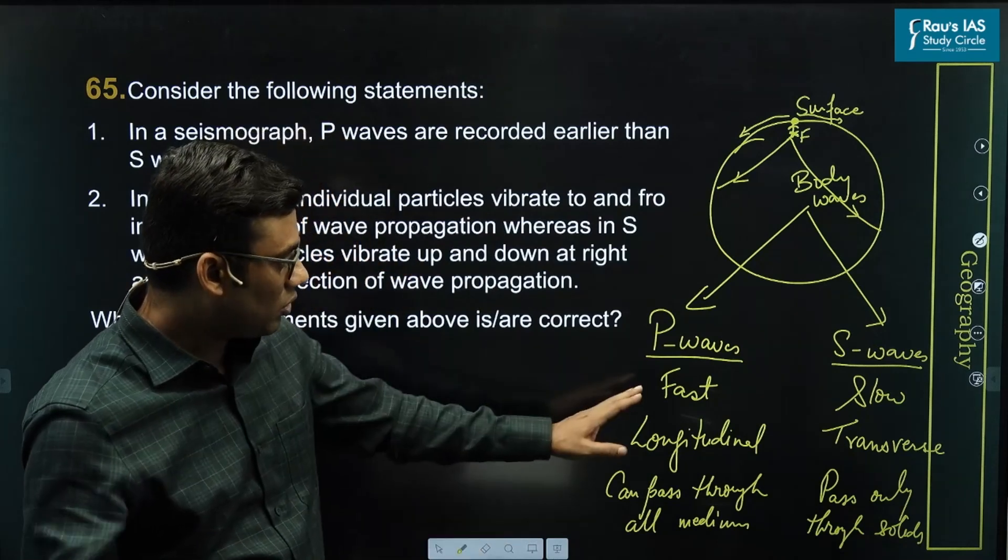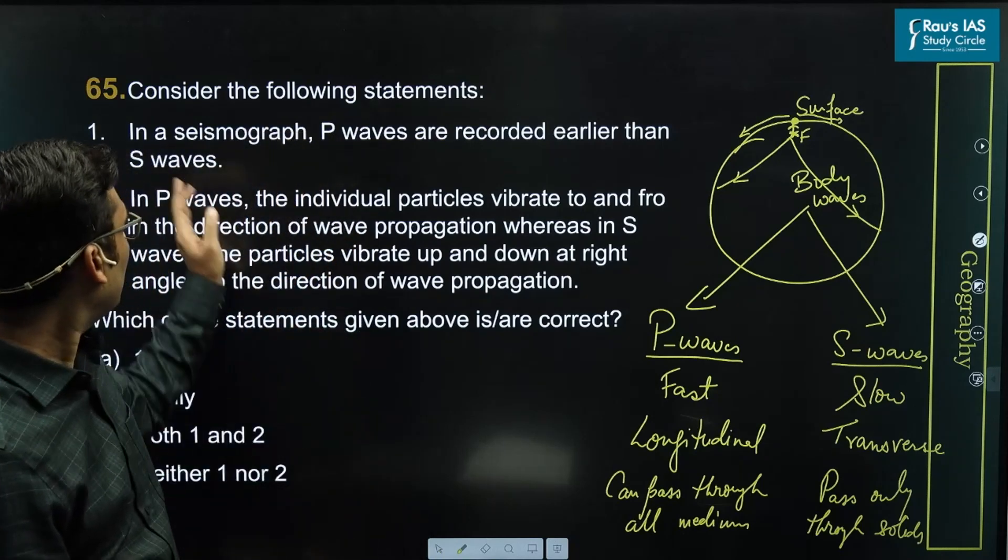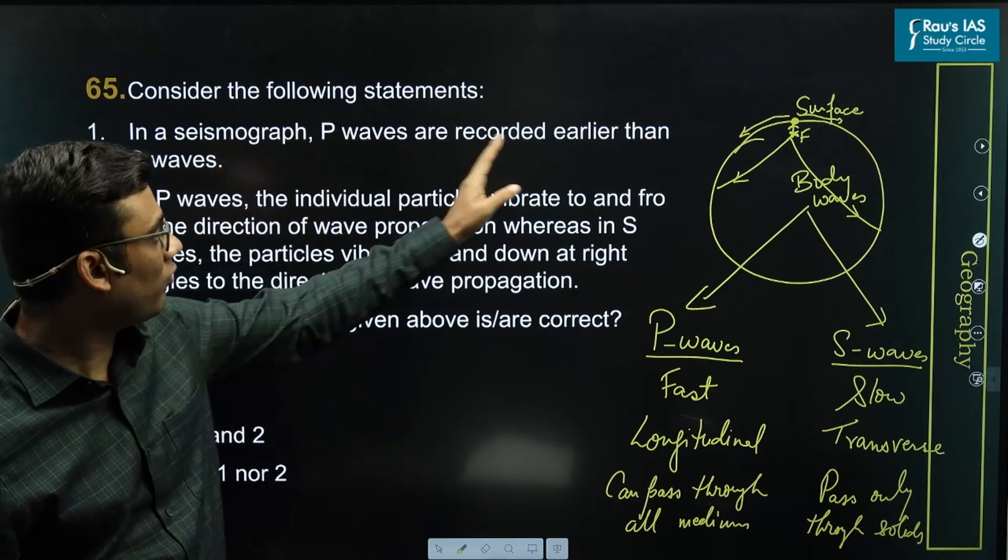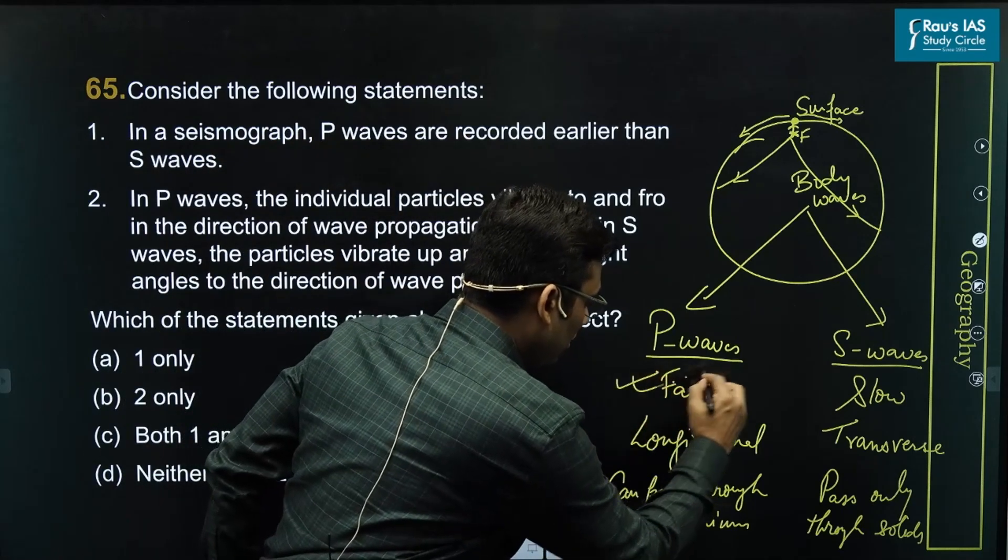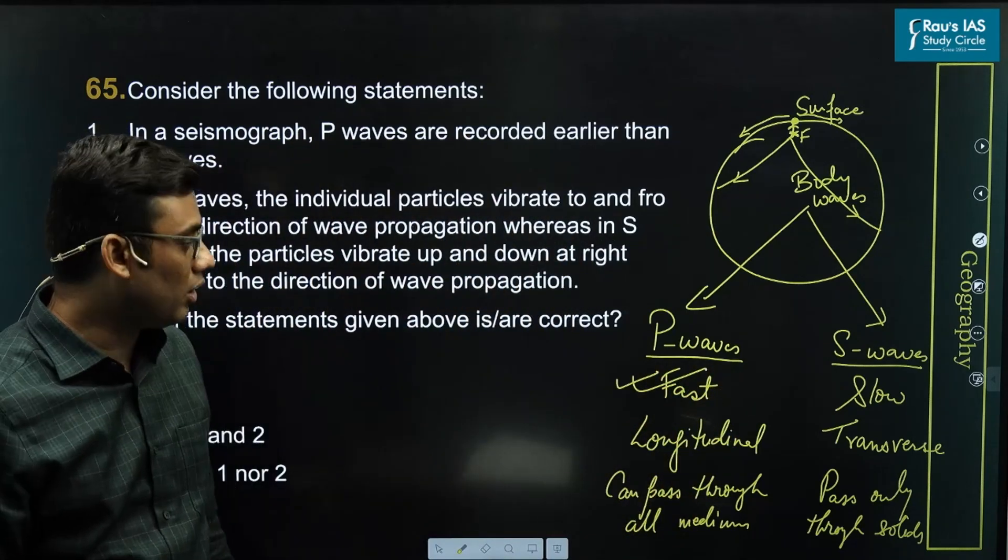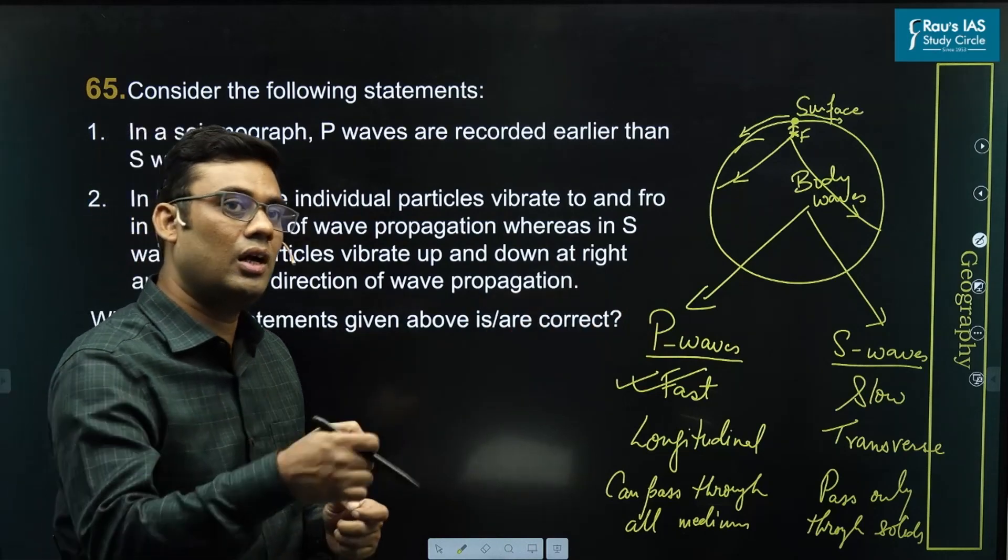Now, based on this, if we try to figure out the question. First statement: in a seismograph, P waves are recorded earlier than S waves. Yes, based on this particular difference that P waves are faster, primary waves, they reach first. They are recorded earlier. Definitely this statement becomes correct.